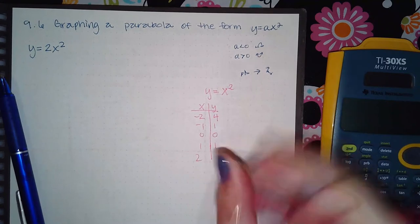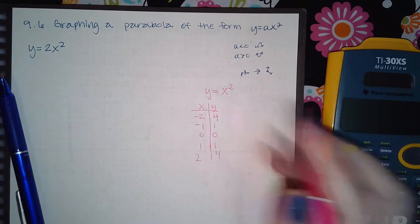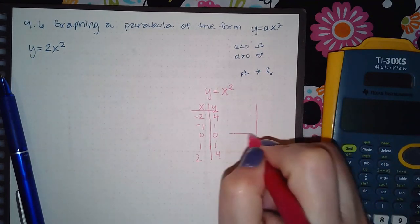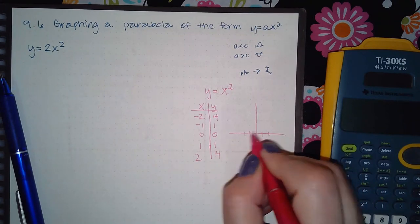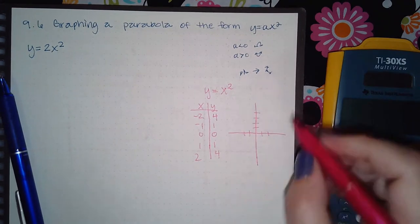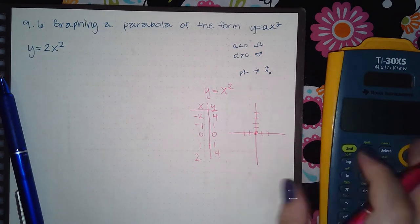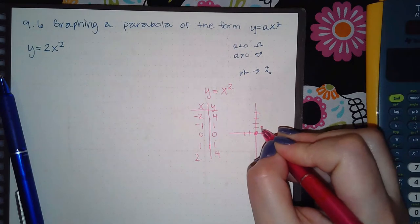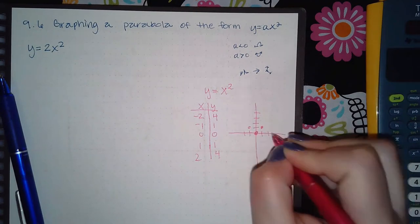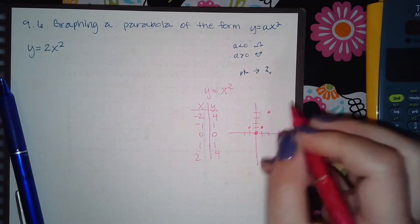So these are the values and if I graph this I get 1, 2, 1, 2, 1, 2, 3, 4. I get 0, 0 in the center, I get 1 and 1, negative 1 and 1, 2 and 4, and 2 and 4.